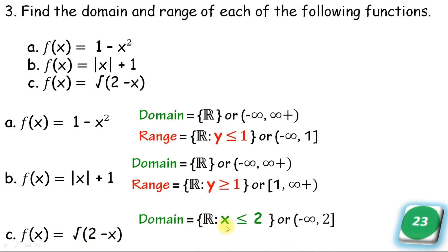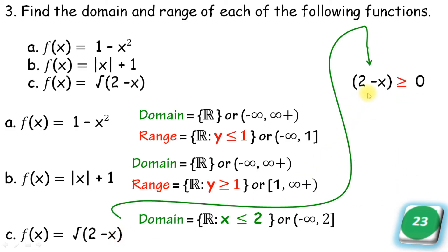For the square root function, the domain value would be x less than or equal to 2, since the expression 2 minus x must be greater than or equal to 0. Setting 2 minus x equal to 0 gives x equal to 2, so x must be less than or equal to 2.